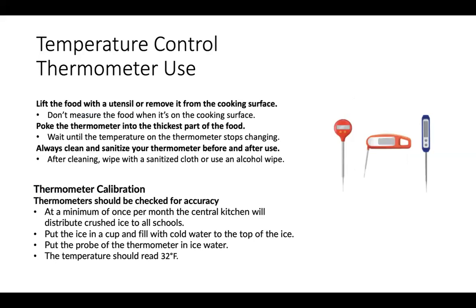Thermometer use. We have discussed several occasions that you will need to use a thermometer to test the temperature of the food that you wish to serve. When using a thermometer, lift the food with a utensil and remove it from the cooking surface. Do not measure food when it is on a cooking surface or in the oven — this will give an inaccurate temperature reading. Poke the thermometer into the thickest part of the food. Wait until the temperature on the thermometer stops fluctuating. Always clean and sanitize the thermometer before and after use. After cleaning the probe thermometer, wipe with a sanitized cloth or use an alcohol wipe.